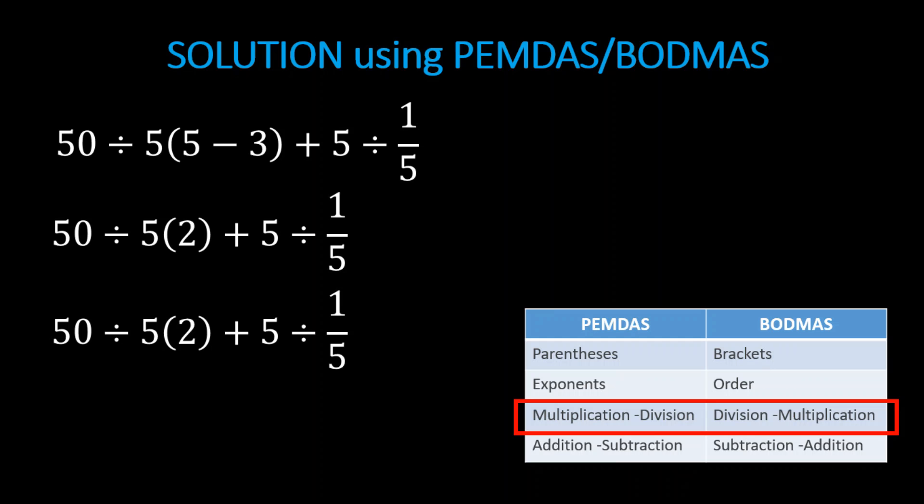The next precedence of the operation is multiplication and division. The parentheses enclosing 2 now acts as a multiplication operator, and since division and multiplication are of the same precedence, let us start from left to right. Also, the next expression, 5 divided by 1 over 5, cannot be mixed up with the first since addition is in the last precedence.